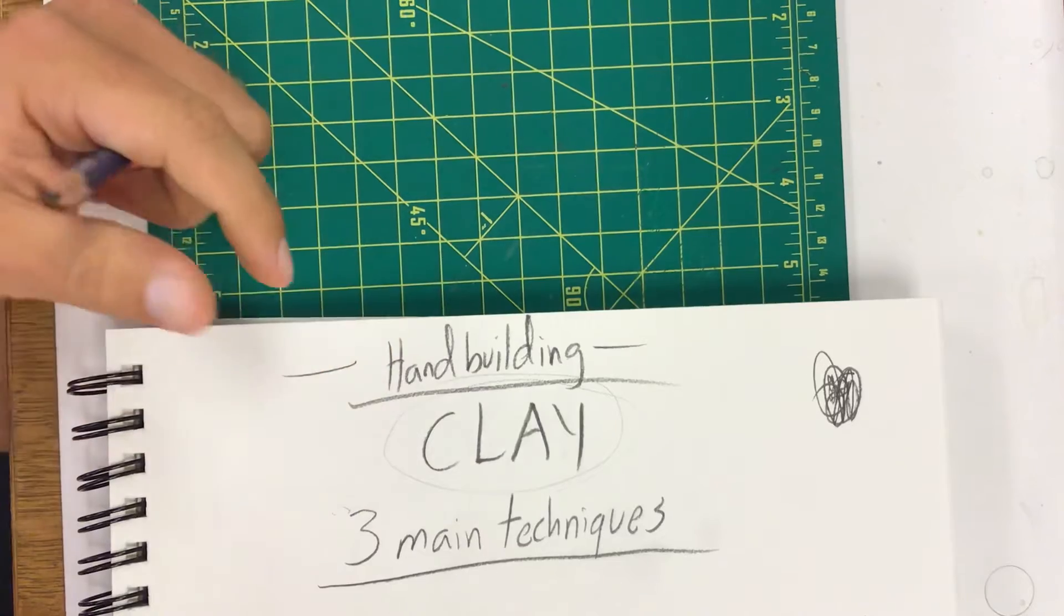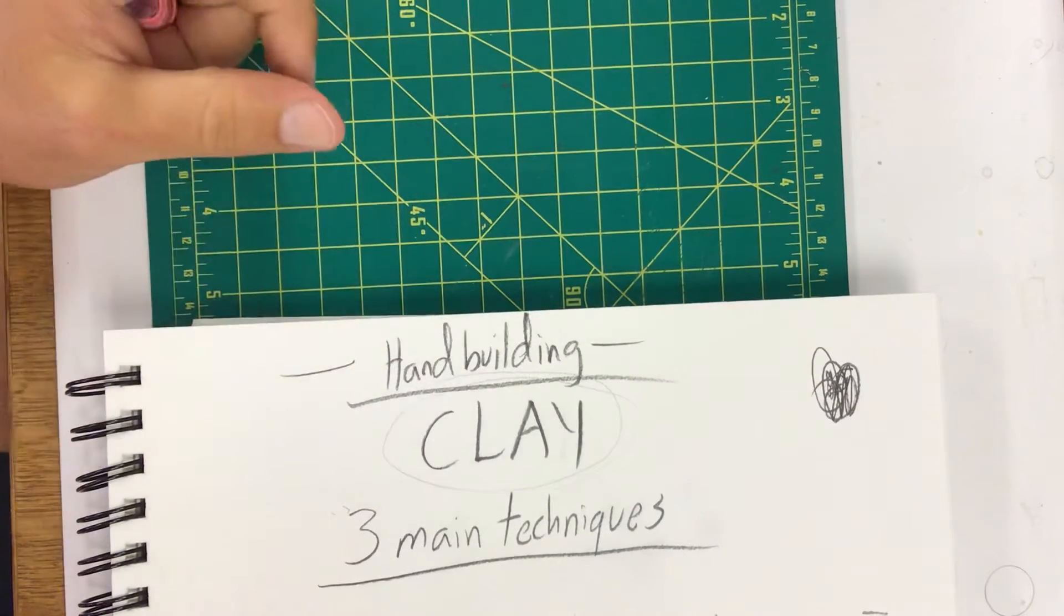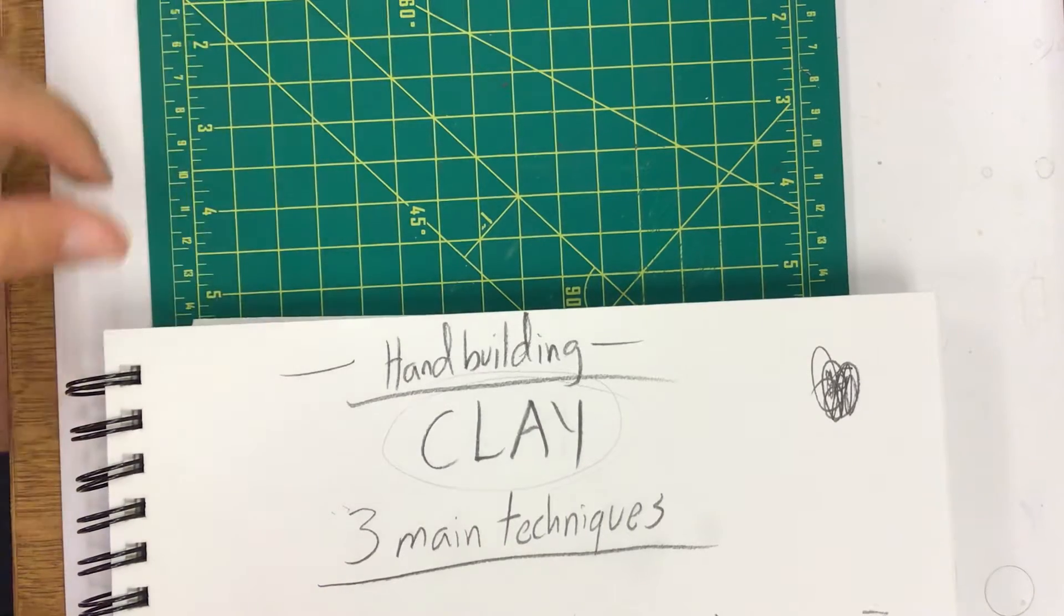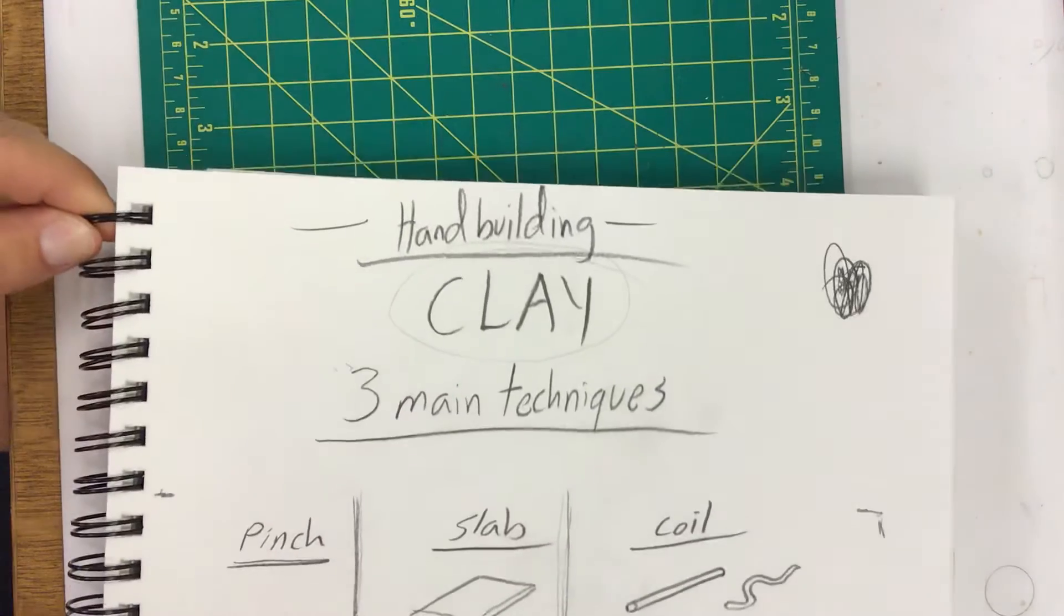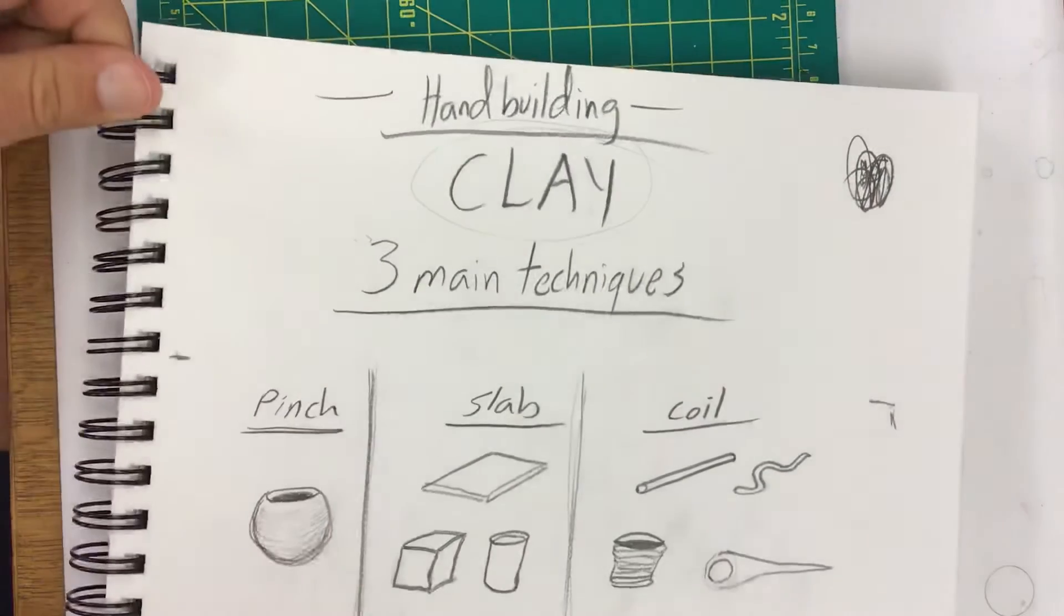When we say hand-building, that essentially just means you're not throwing it on the wheel that's spinning and you're not using that electric technology. You're just building it all with different techniques that you can do with just your hands. So those three main techniques we've got pinch, slab, and coil. You've probably done some of these before.